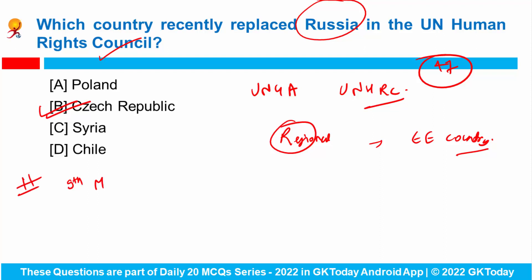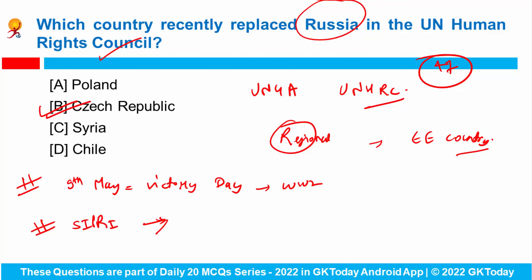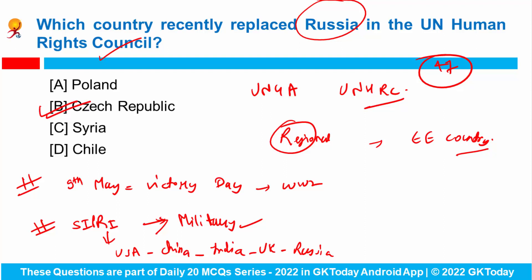Russia celebrates 9th of May as Victory Day to commemorate the Soviet Union's role in defeating Nazi Germany in World War II. There was also a SIPRI report on military expenditure in which the top-ranked country was USA, second was China, third was India, fourth was UK, and fifth was Russia. So India is the world's third highest military spending country.